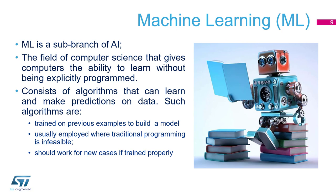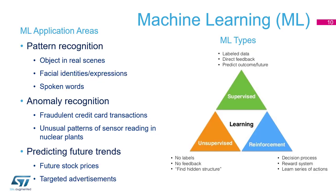The machine will learn — you will use a machine to learn and to train your models. It could be mathematics, it could be statistics. And inside machine learning, what can we do? We have pattern recognition — that's a keyword. We have anomaly recognition, and some prediction into the future, like stock prices, advertisement, and so on.